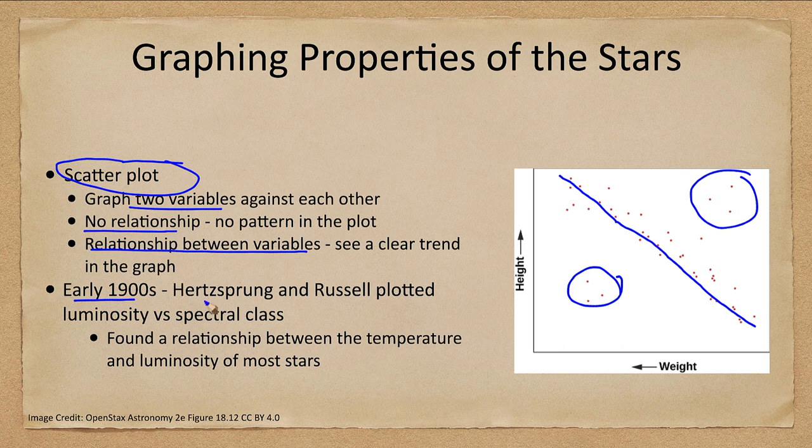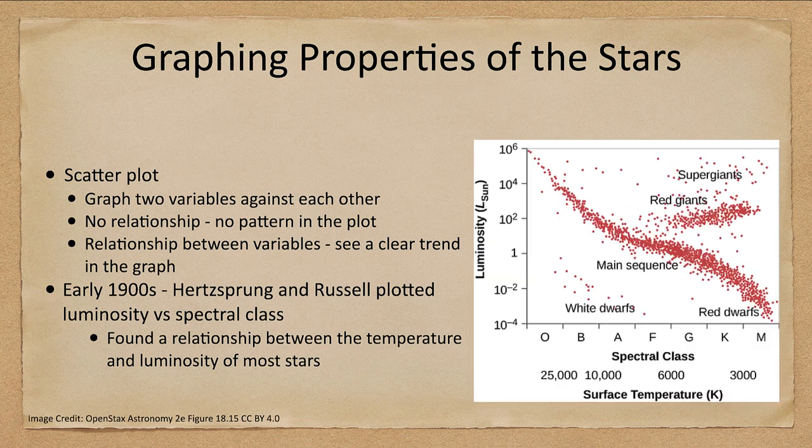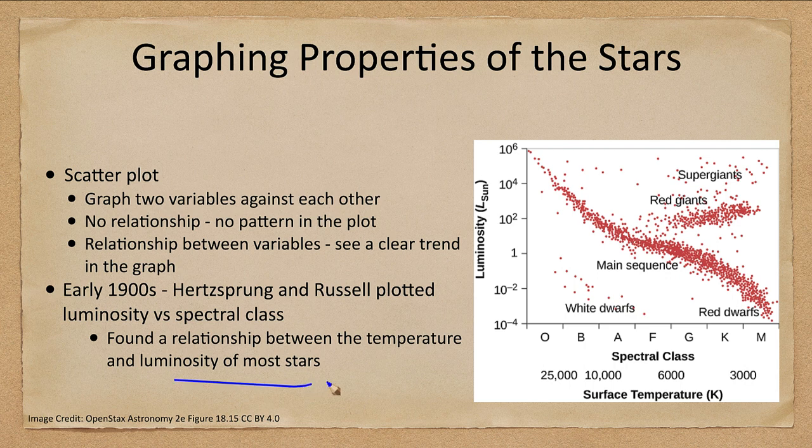And in the early 1900s, two astronomers, Hertzsprung and Russell, looked at plotting the luminosity versus the spectral class. And what you see there when you plot that is that there is a relationship between the temperature and the luminosity of the stars. So these two are related.